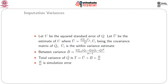There can be within and between imputation variances. Let u be the squared standard error of Q, estimated by u-bar, where u_i-hat is the covariance matrix of Q_i-hat, and u-bar = (1/m) Σ u_i-hat. This gives a within-variance estimate of Q_i-hat. Similarly, the between-variance estimate uses (Q_i-hat − Q-bar)(Q_i-hat − Q-bar)ᵀ divided by (m−1), giving the between variance of the m complete data estimates.